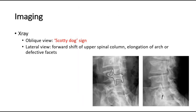For imaging, you can do an X-ray of the spine. The oblique view can show the scotty dog sign, which is a classic pathognomonic sign of spondylolisthesis, where there is a pars fracture with a broken neck or collar. The lateral view can show forward shifting of the upper spinal column onto the stable vertebra below, and may also show elongation of the arch or defective facets. This picture shows the scotty dog appearance.